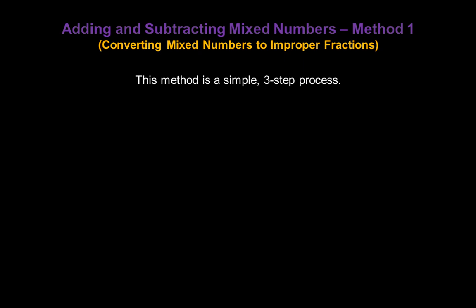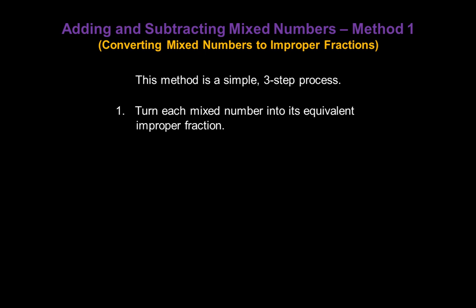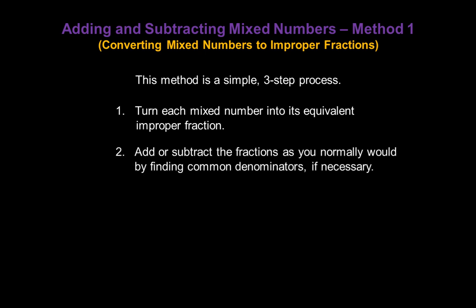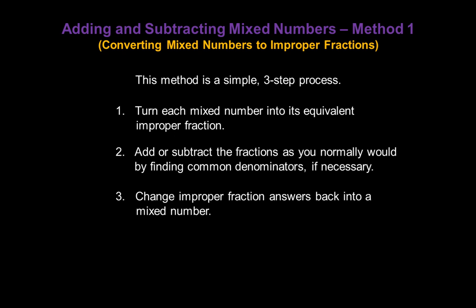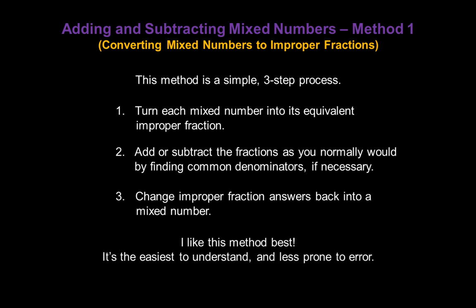Let's look at method one first — converting mixed numbers to improper fractions. This method is a simple three-step process. Step one: turn each mixed number into its equivalent improper fraction. Step two: add or subtract the fractions as you normally would by finding a common denominator if necessary. Step three: change any improper fraction answers back into a mixed number. I like this method the best — it's the easiest to understand and it's less prone to error.